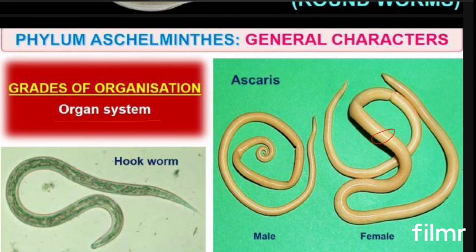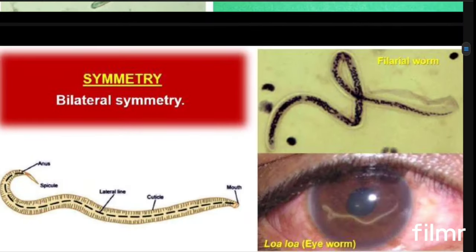Some examples are hookworm, Ascaris, etc. If you take the cross-section, you can see that there will be a round spherical-like structure, so that's why their name is roundworm. Going for symmetry, they all show bilateral symmetry — that means when you cut through the central axis, you get two equal halves. Different types of worms like eye worms and filarial worms all come under Aschelminthes and show bilateral symmetry.